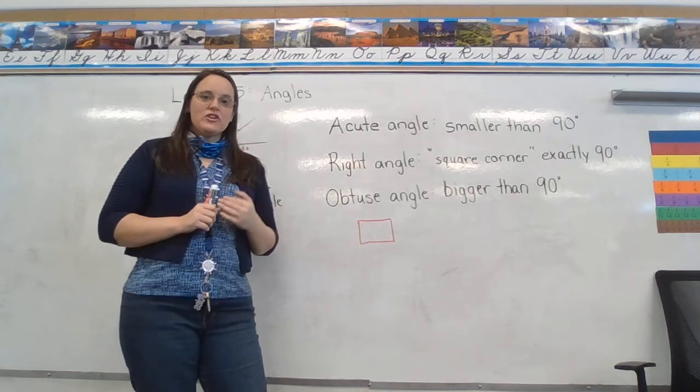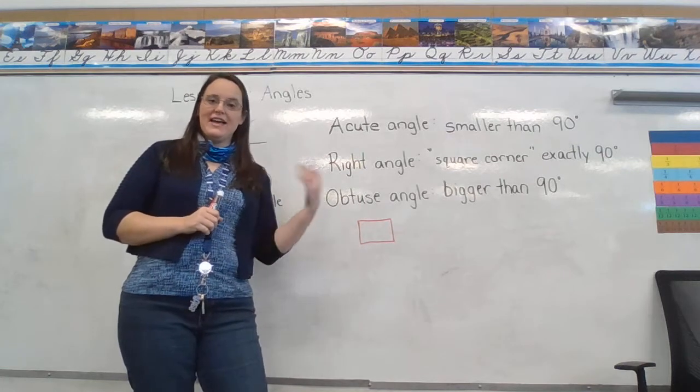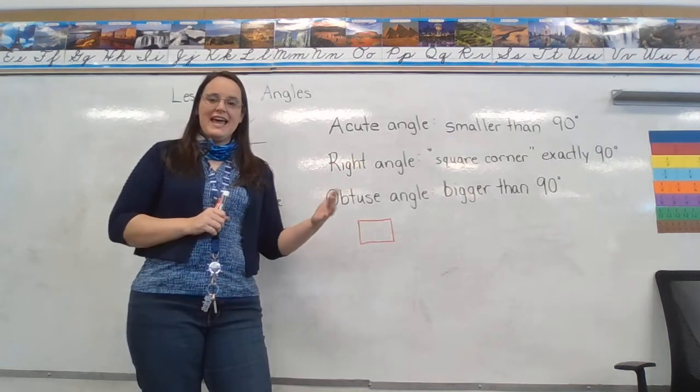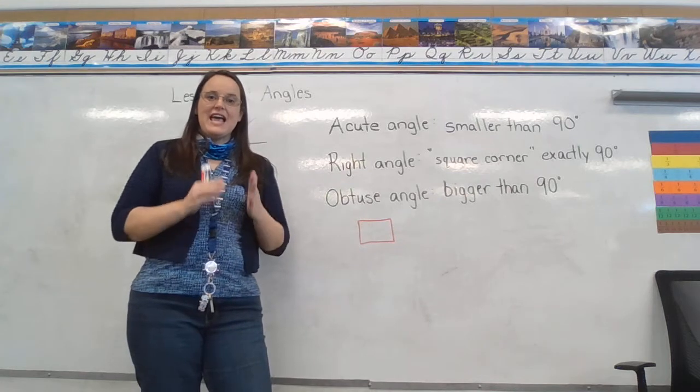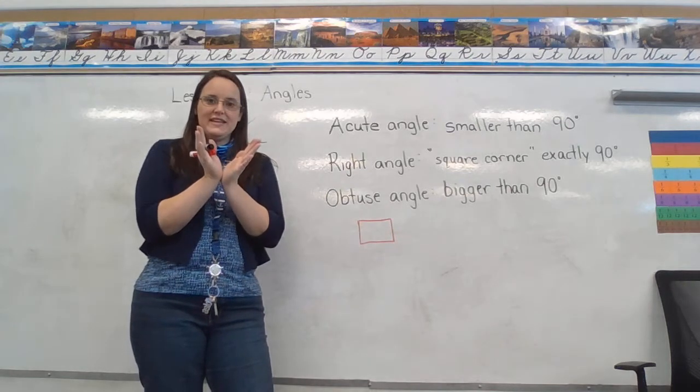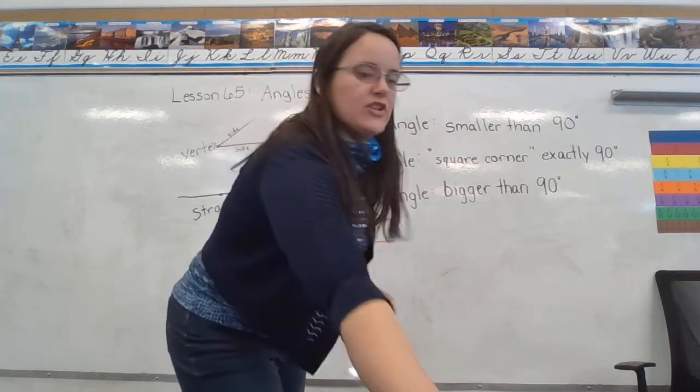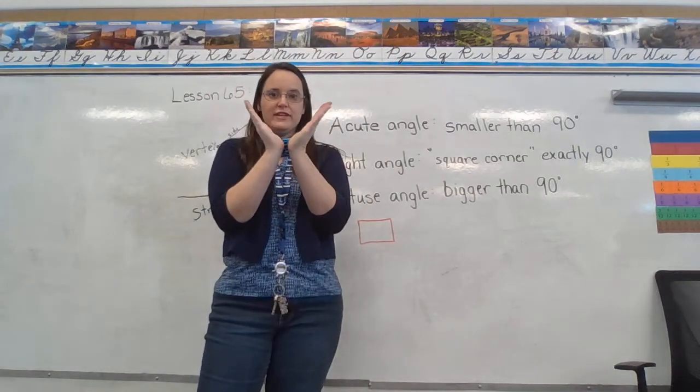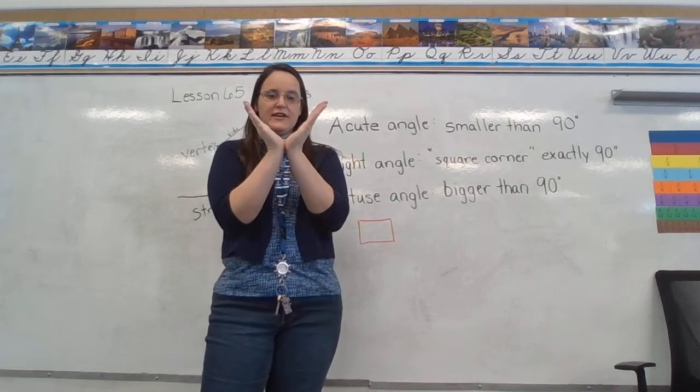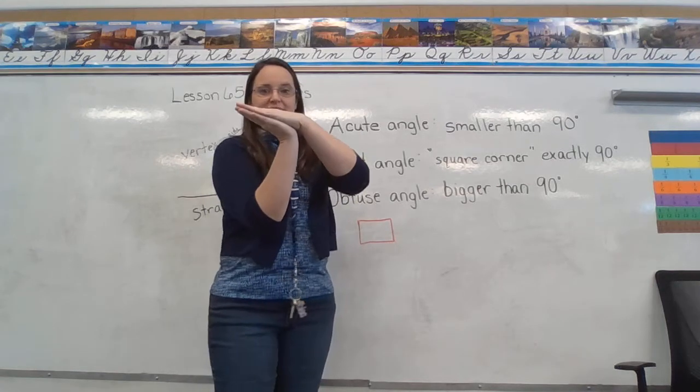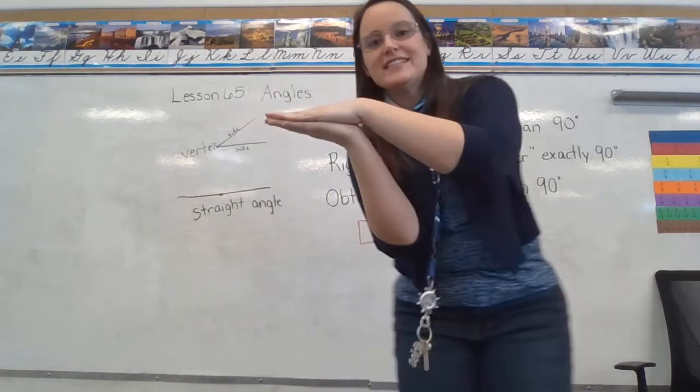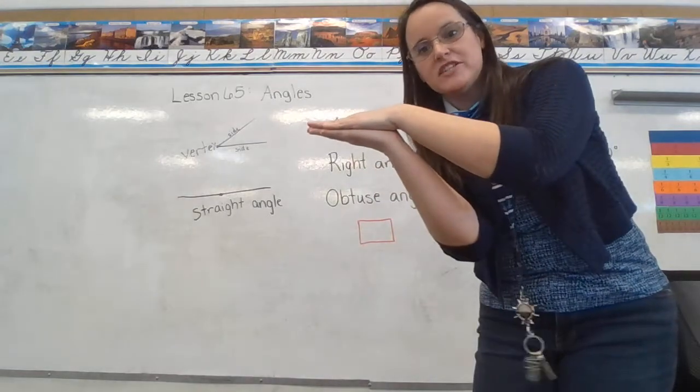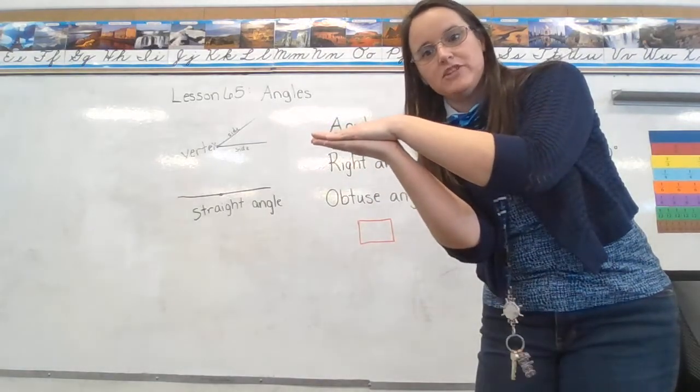So we measure angles by something called degrees and a degree tells us how far open the angle is. So let's pretend my hands are the two sides of the angle and I'm going to connect them at the vertex here at my wrists. This, if it's closed, this is a zero degree angle. There is no space in between my two hands.